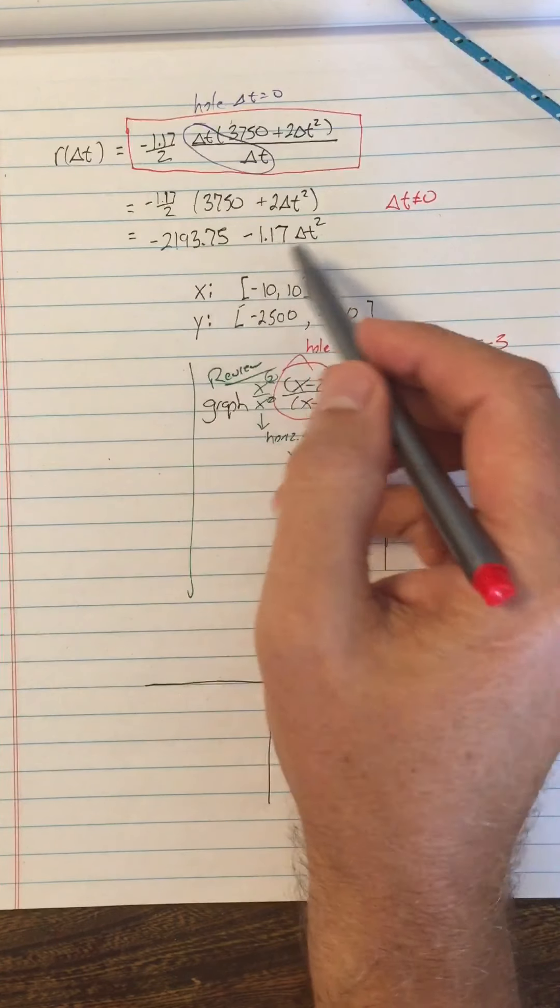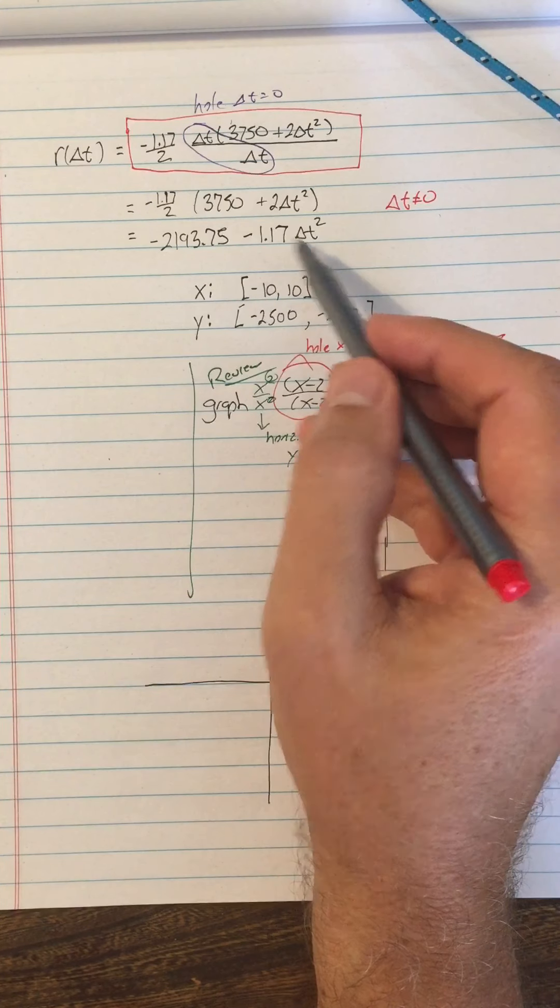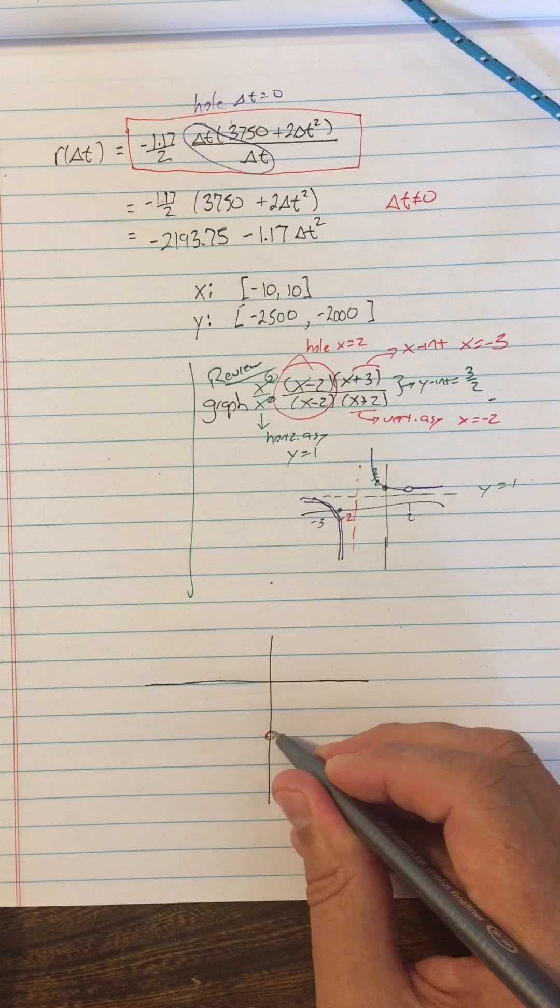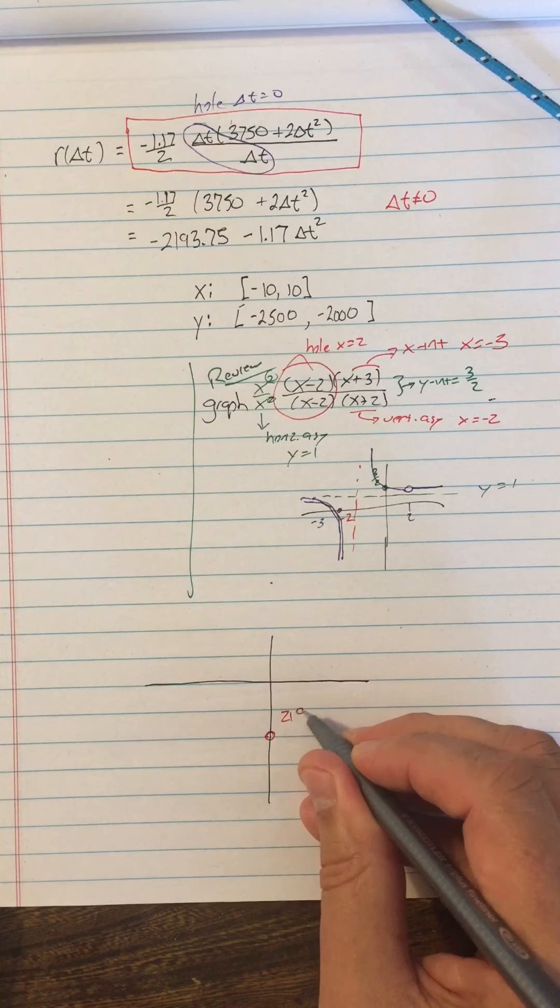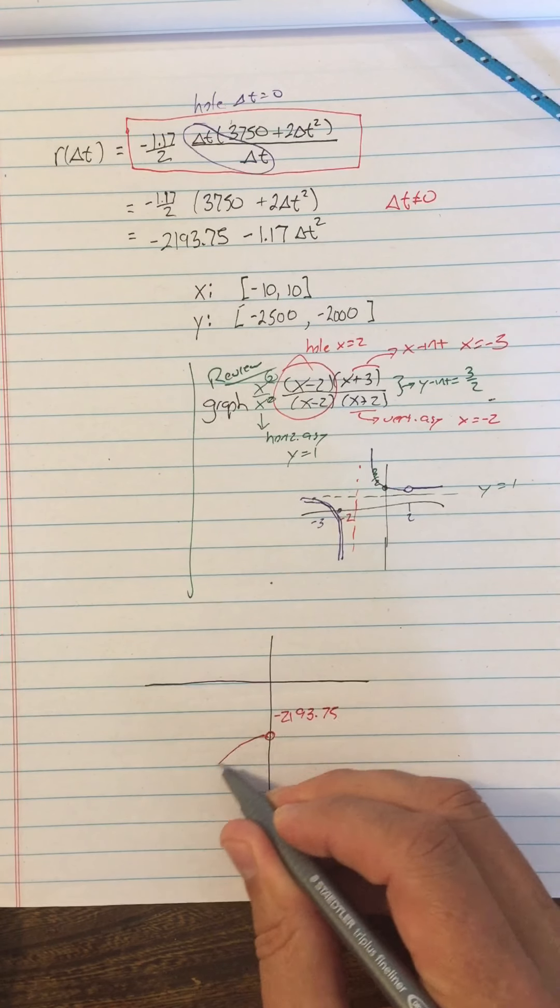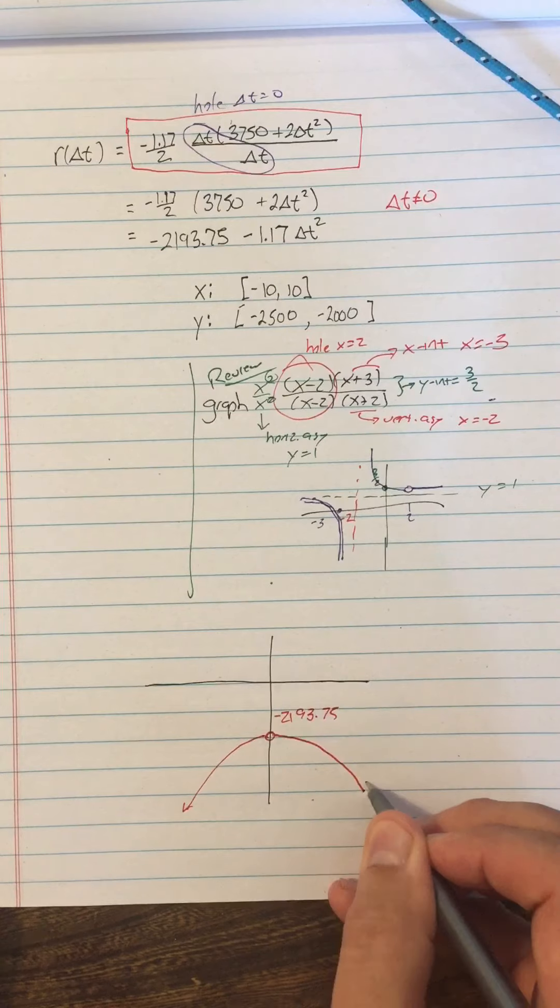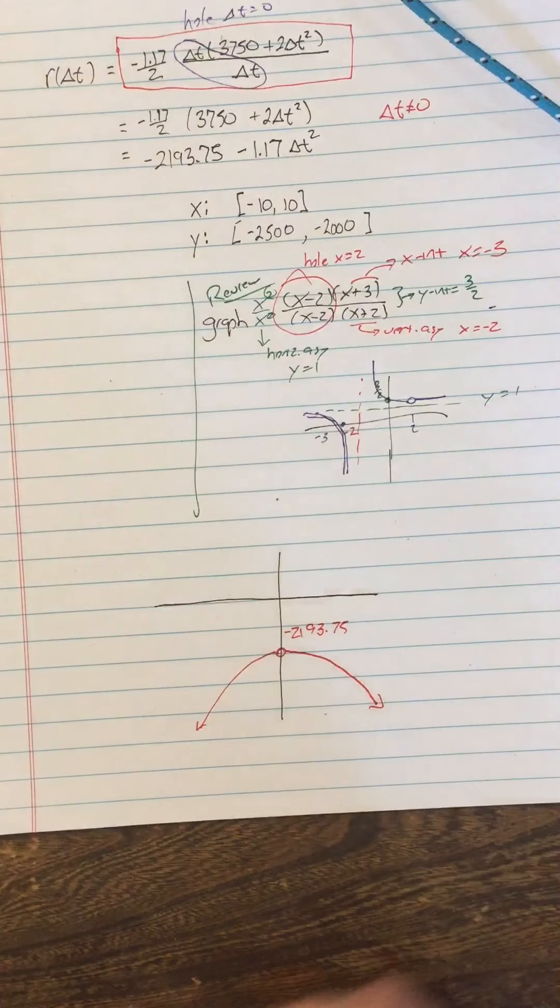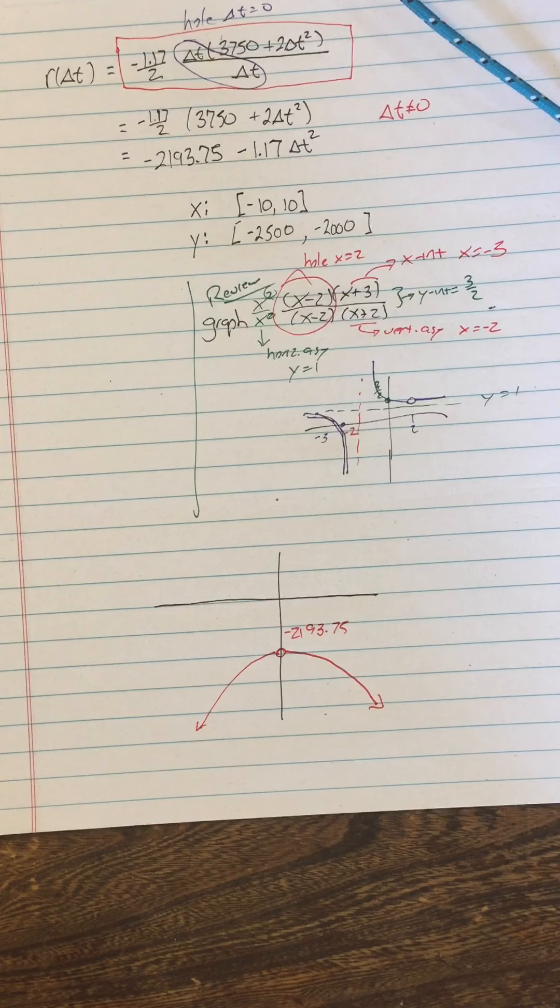So we know that there's a hole at delta t equals zero. We also know the y-coordinate of the hole by just putting delta t equals zero here and getting negative 2193.75. So that's here, 2193.75. And then we know it's a downward-facing parabola, so we know it does this. Yep, so that's how we do that graph by hand. So we would be able to see that there is a hole in that graph.